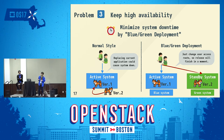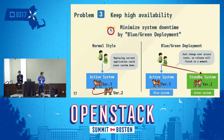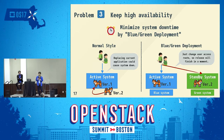In a normal software release style, we need to replace the active system application with a new version, which sometimes makes rollback difficult if mistakes occur. Blue-green deployment avoids this situation. In blue-green deployment, we first create a standby system with the new version application while the active system is working — this never affects customers. At the release date, we just switch the user access route from the active system to the standby system, so the release finishes instantly. If we find bugs after release, rollback is also easy — we just do the same operation in the opposite direction.